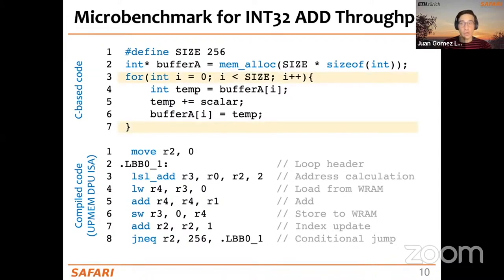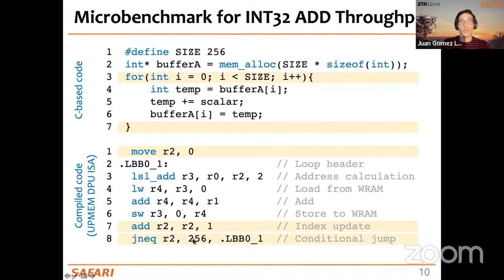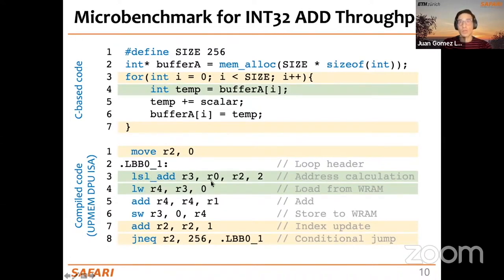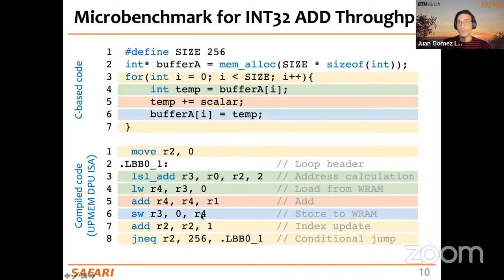If we look at how the compiler translates this C code into the DPU ISA, we can identify the for loop compiled to a move instruction initializing the index in R2, with an increment and conditional jump at the bottom checking the loop bound. The WRAM access requires calculating the address from the base address and index R2. Then we have the addition operation and the store operation — which reuses the previously calculated address since we write to the same output position.